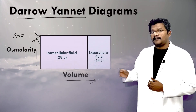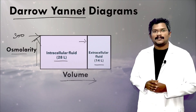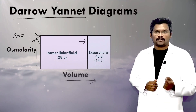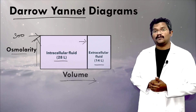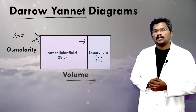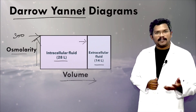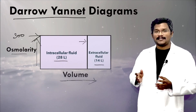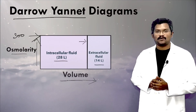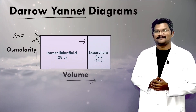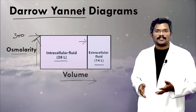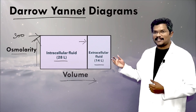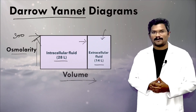The barrier between these two compartments is the cell membrane, which only selectively allows solutes but freely allows the movement of water molecules. Though water can freely move, there can be a net movement of water only if there is an osmolarity difference between the two compartments. In this video, we are going to discuss what is the effect of adding different concentrations of saline solution in the extracellular compartment.